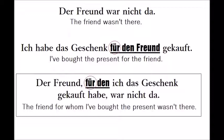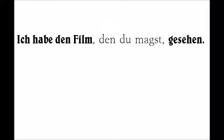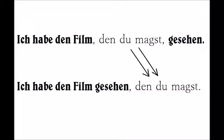By the way, you can also add a relative clause at the end of the sentence instead of directly after the noun. This is mostly done with objects, because they are close to the end of the sentence anyway. So instead of 'Ich habe den Film, den du magst, gesehen,' you can also say 'Ich habe den Film gesehen, den du magst.'